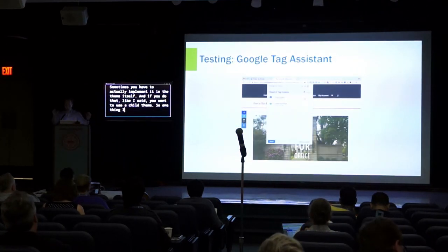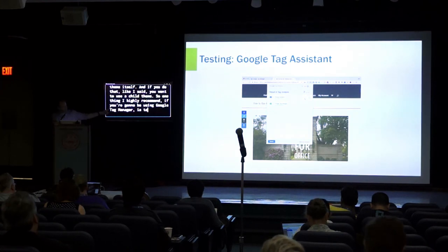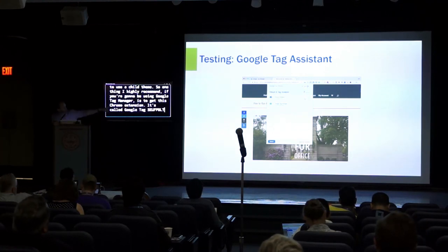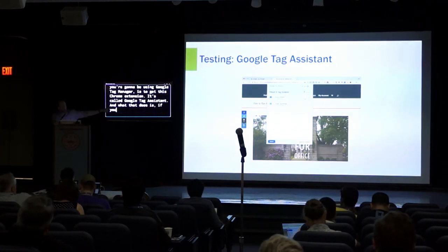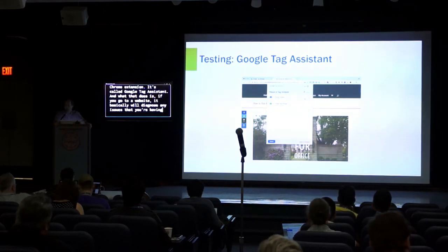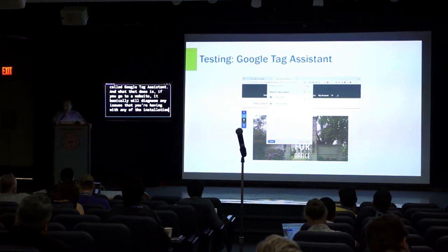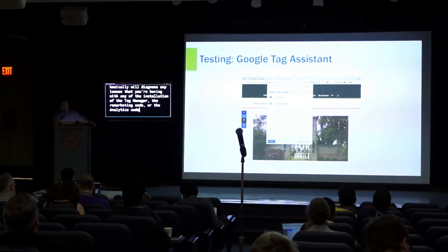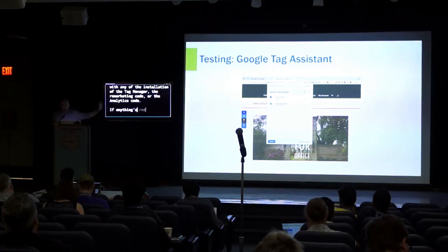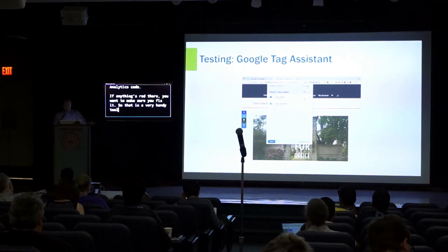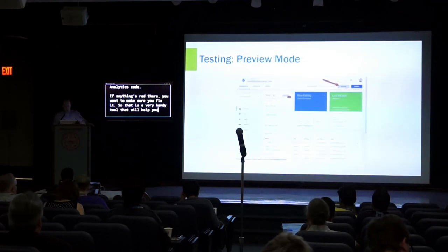One thing I highly recommend if you're going to be using Google Tag Manager is to get this Chrome extension called Google Tag Assistant. What that does is when you go to a website, it will basically diagnose any issues you're having with the installation of Tag Manager, the remarketing code, or the analytics code. If anything is red there, you want to make sure you fix it. That is a very handy tool that will help you know whether or not it's working properly.